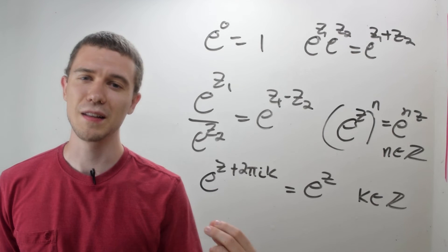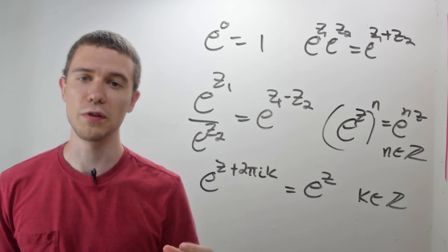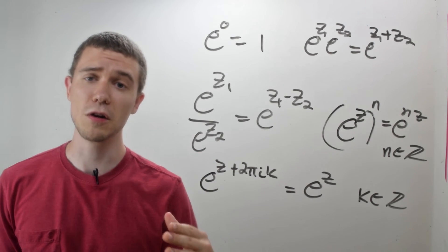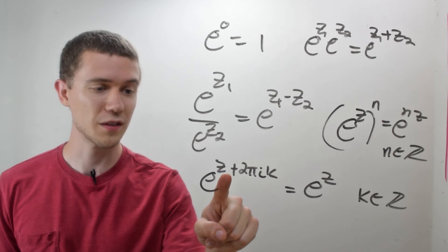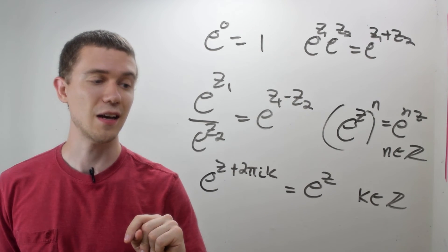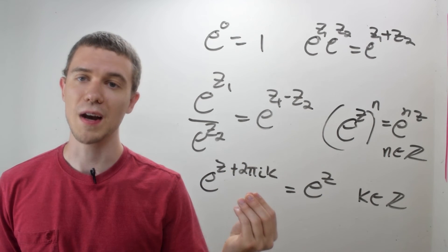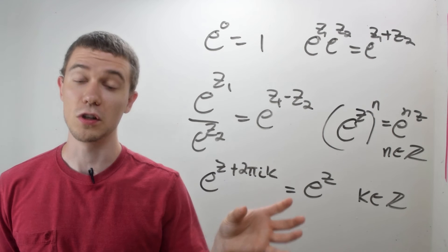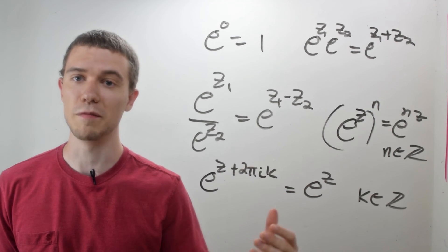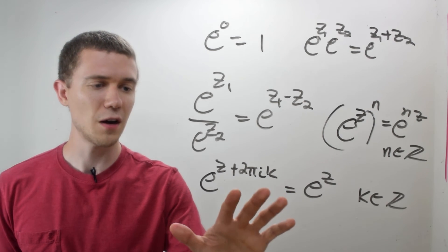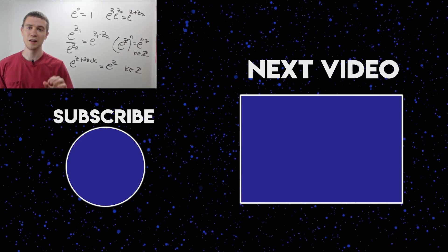We also have an interesting thing, that the complex exponential function is periodic, with period 2 pi i. So in other words, e to the z plus 2 pi i k, that's just e to the z itself. So that really comes down to the fact that this exponential function is made up of sines and cosines, which have period of 2 pi. And this is fairly easy to show using the definition.